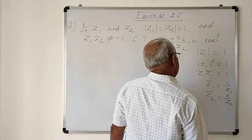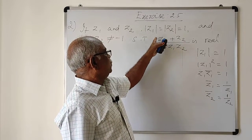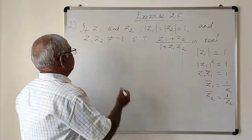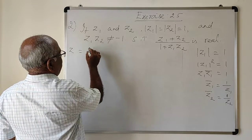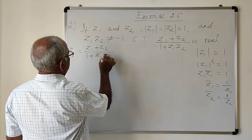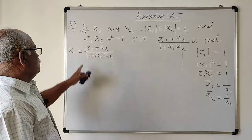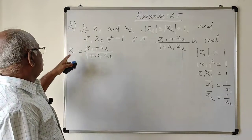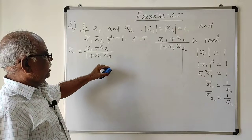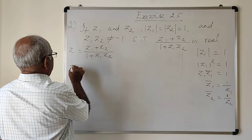From these two results, we are going to show that Z1 plus Z2 divided by 1 plus Z1 into Z2 is a real number. Consider the expression as a complex number Z — that is Z equals Z1 plus Z2 divided by 1 plus Z1 into Z2. Because we have to show this is real, it is enough to show that Z equals Z bar. If a complex number and its conjugate are equal, then the complex number is real.